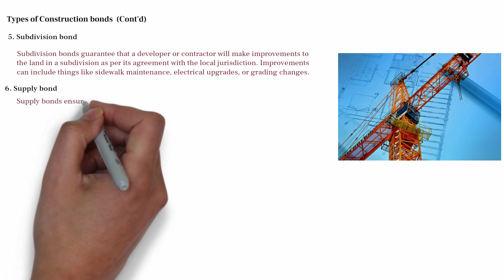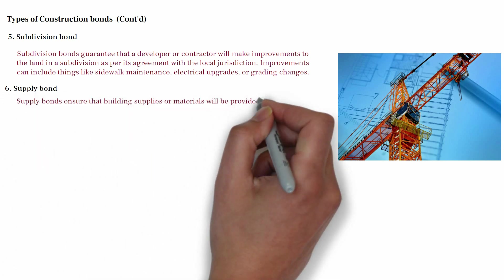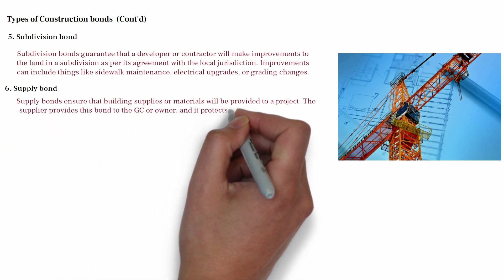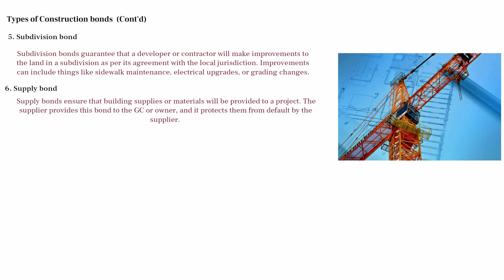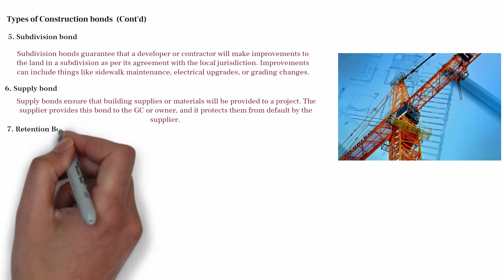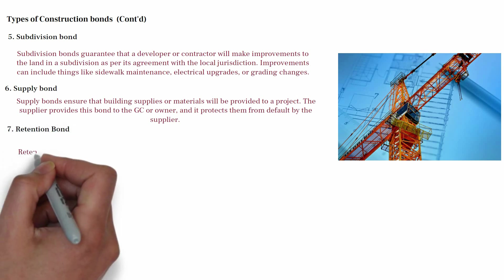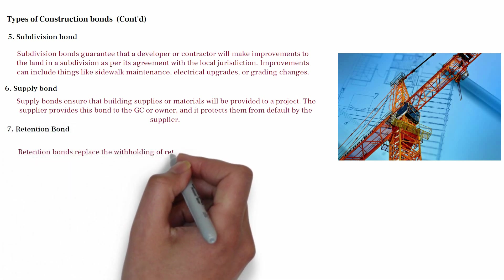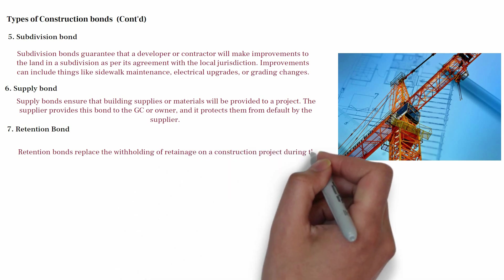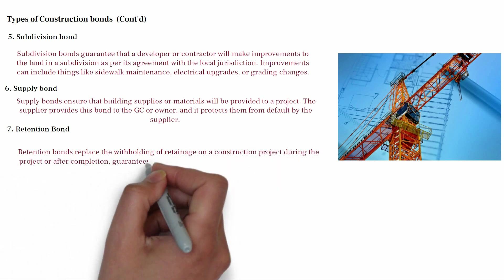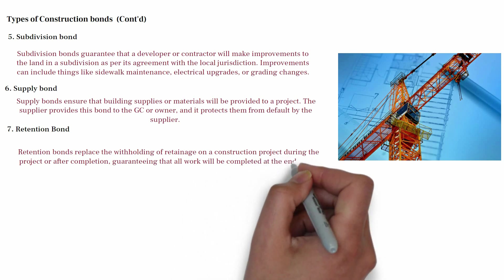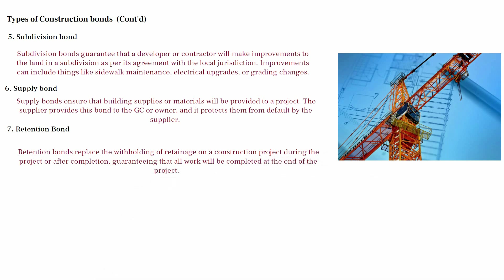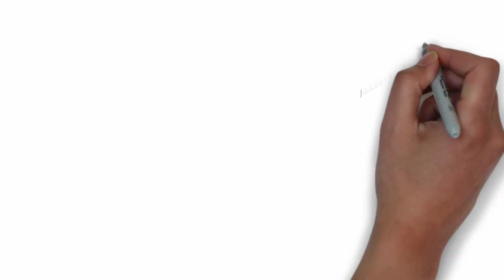If a claim needs to be made, the jurisdiction would be the one filing a claim. Six: Supply bond — this ensures that building supplies or materials will be provided to a project. The supplier provides this bond to the general contractor or owner, protecting them from default by the supplier. Seven: Retention bond — it replaces the withholding or retainage on a construction project during the project or after completion, guaranteeing that all work will be completed at the end of the project.